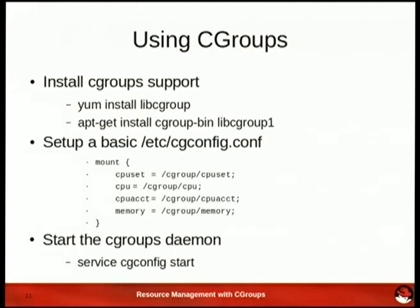If you want to start using Cgroups, most modern Linux distributions have it now. You can just do yum install or apt-get install. They'll usually come with an example cgconfig, which is what you need in order to set up the virtual file system that Cgroups uses to manage its configuration. On Ubuntu, that would be under /dev/cgroups, but under RHEL 6 and Fedora, it tends to be /cgroup. Then simply start the daemon and away you go. You can do an ls and look into /cgroups/cpuset to see what the default rules are.